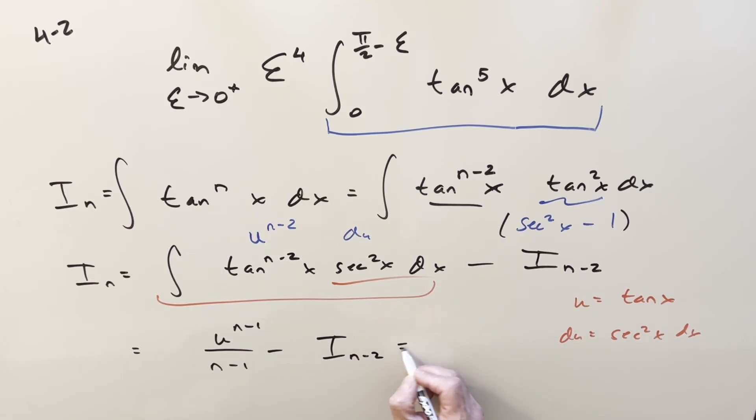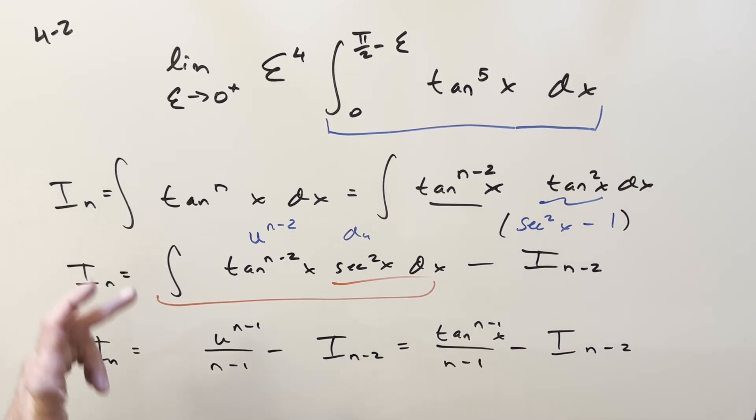But then we can just back substitute on it real quick. The u is tangent. So what we have for our formula of i sub n is going to be just tangent n minus 1 of x over n minus 1 minus i n minus 2. So basically, it's a real easy formula. We reduce the power by 1, same value in the exponent. And then we've got another integral reducing the power by 2.